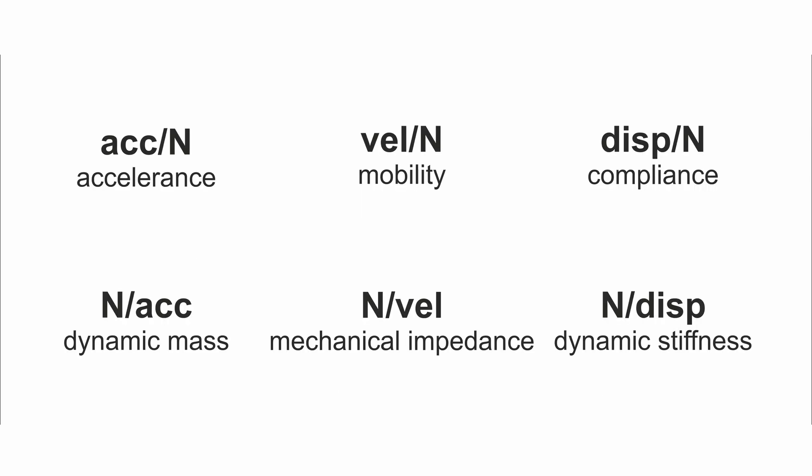Next note is about physical quantity of measurement. The excitation is always force in newtons. When the response is in acceleration, then FRF is called accelerance. If the response is in velocity, then FRF is called mobility. In case of displacement response, we talk about compliance. So we get G divided newton, mm per second divided newton and micrometer divided newton.